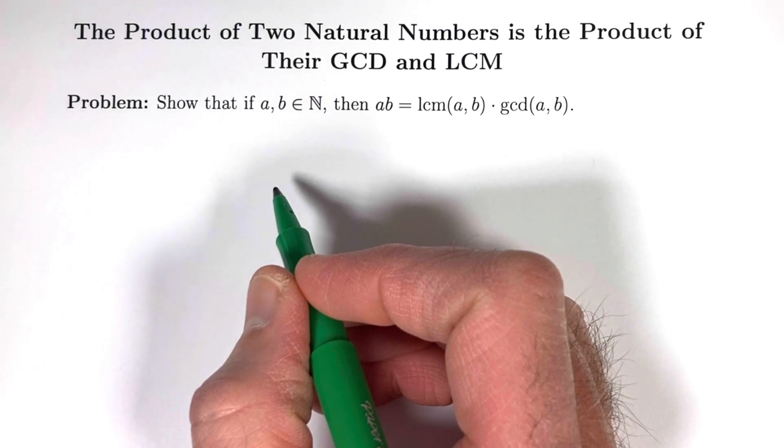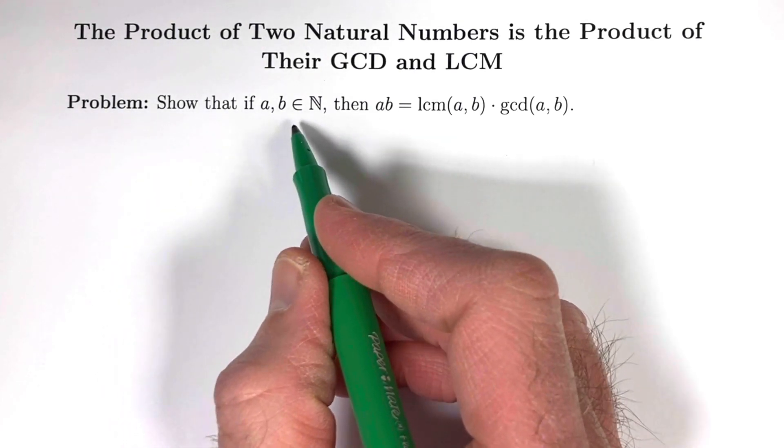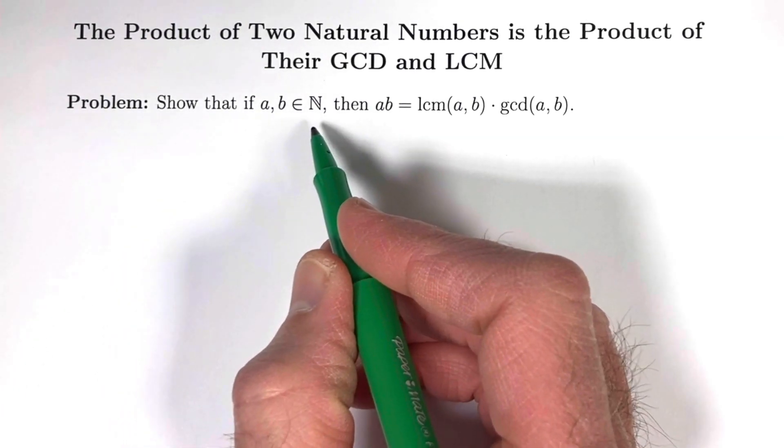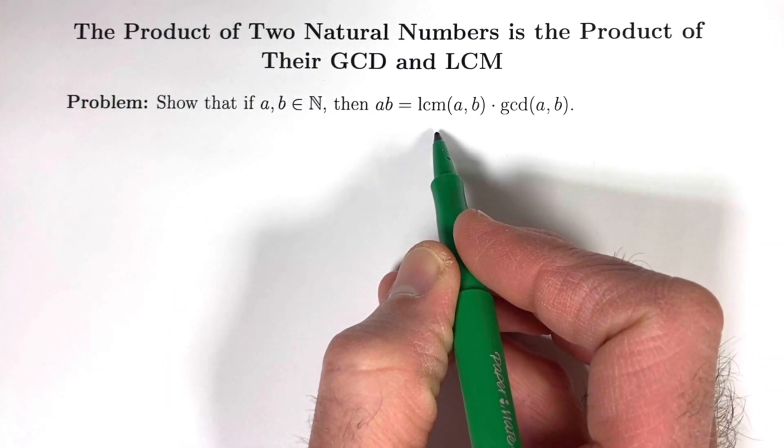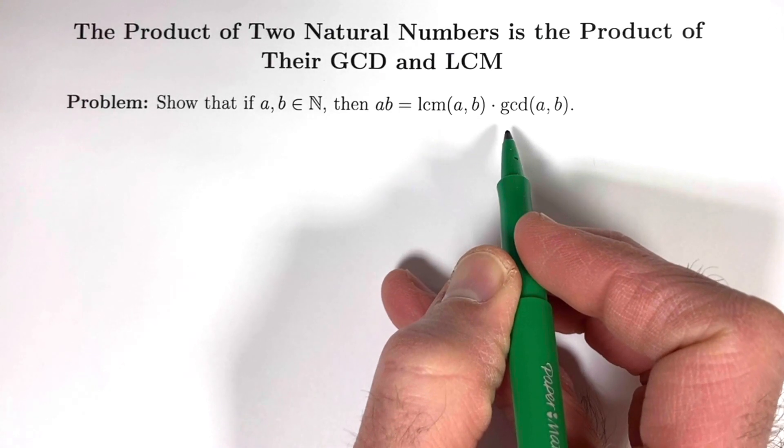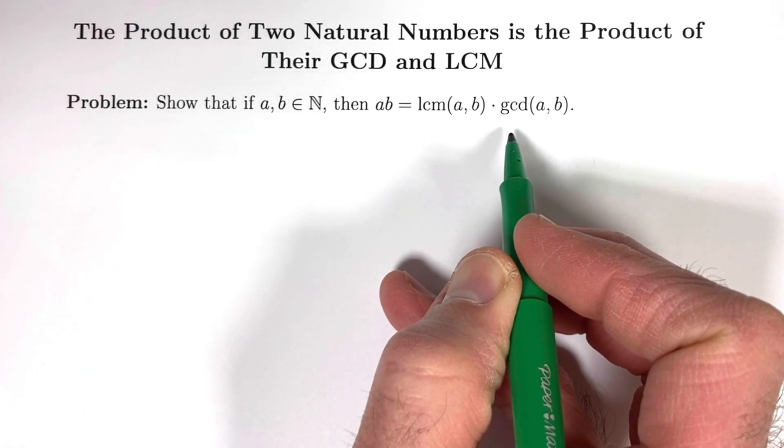One problem with such an elegant proof is to show that if A and B are both natural numbers, then the product of A and B is the product of their LCM, their least common multiple, and their GCD, their greatest common divisor.